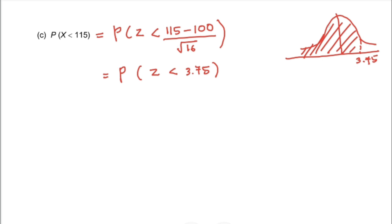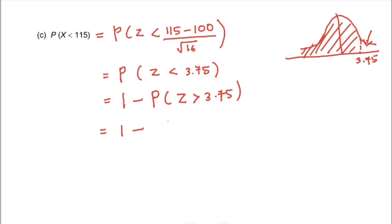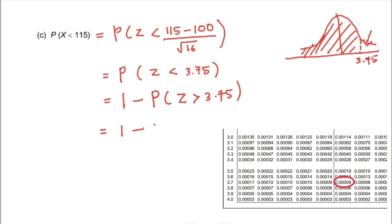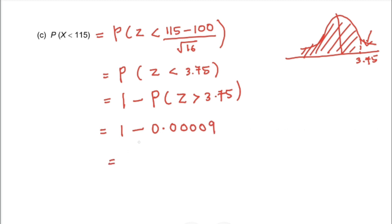Since the area is greater than 0.5 and we cannot find it directly in the table for the less-than direction, we use the complement: 1 minus P(Z > 3.75). From the table, P(Z > 3.75) equals 0.00009, so the answer is 1 minus 0.00009, which equals 0.99991.